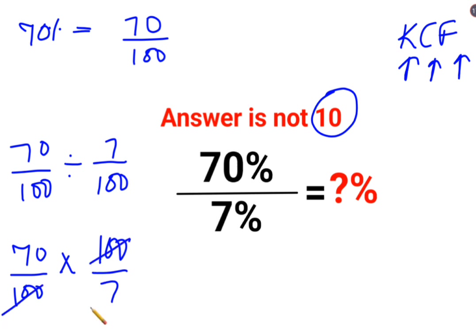So this and this gets cancelled. This is 1s and 10s. So yes, the answer comes out to be 10. But I am saying that the answer is not 10. Now why is that?